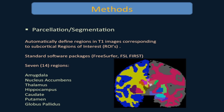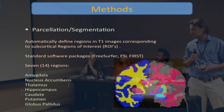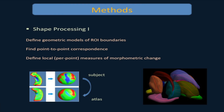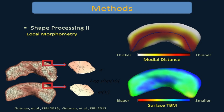The methods — this slide is just for completeness. We segment the MRI image using the standard subcortical regions used in ENIGMA. The next step, the actual shape processing, involves defining geometric models and correspondences so you can do spatially-aware analyses. The last step is what you're actually measuring at every point: each point has two measures, each representing how much bigger or smaller things are in various aspects — how thick the shape is or how dilated the specific region is relative to an average template.